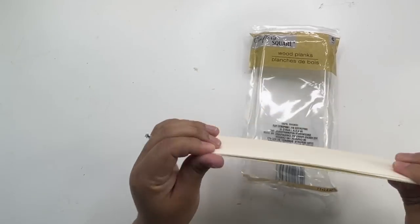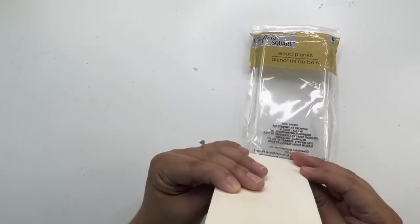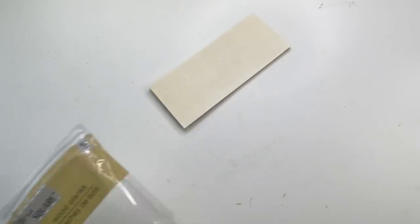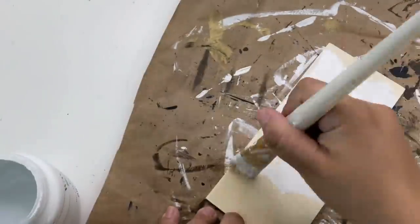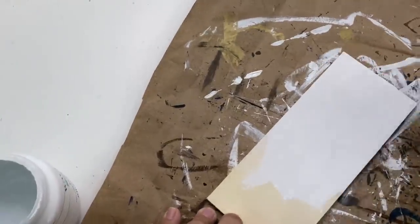For my next DIY, I will be using the leftover wood plank with a paint stick that I cut to size and a jenga block. I'm going to paint everything white.